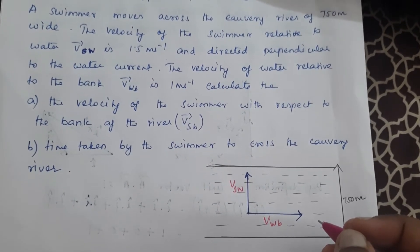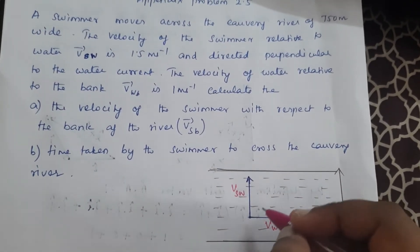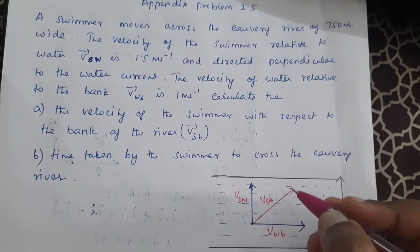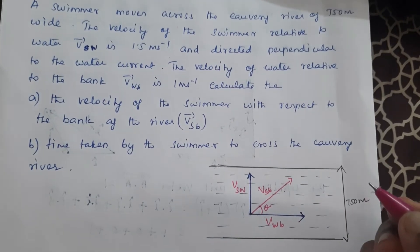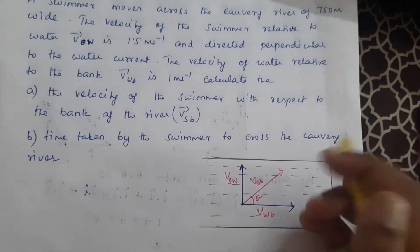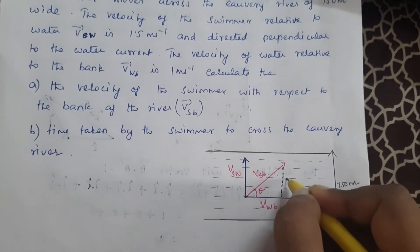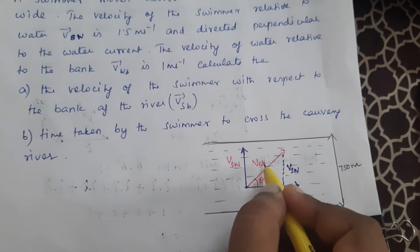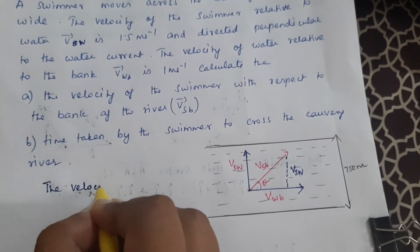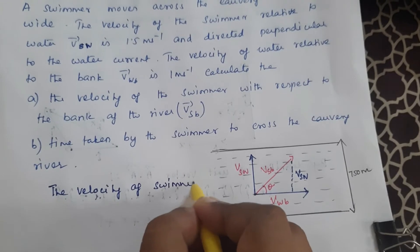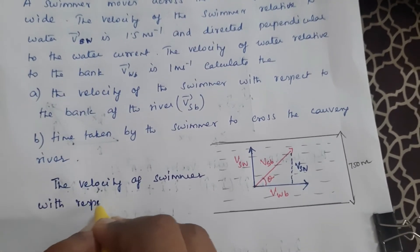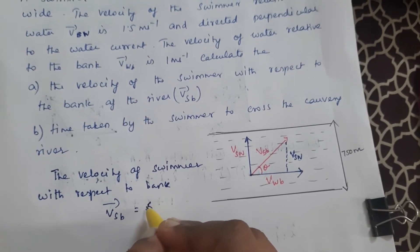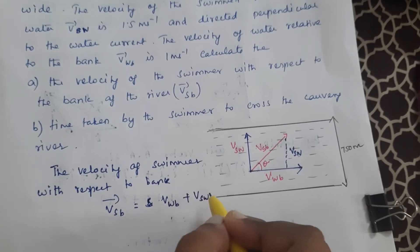We have to find the velocity of the swimmer with respect to the bank. The swimmer's resultant velocity V_SB makes an angle theta with the bank. The velocity of the swimmer with respect to the bank is given by: V_SB = V_WB + V_SW.